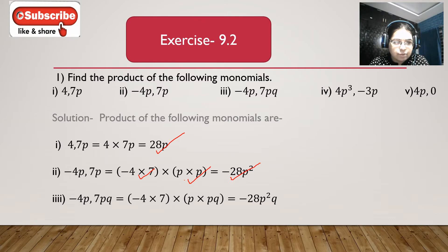Third bit: minus 4p and 7p cube. Minus 4p multiplied with 7p cube gives minus 4 multiplied with 7, then p multiplied with p cube. p multiplied with p cube gives p square, and p square multiplied with p cube gives the result.